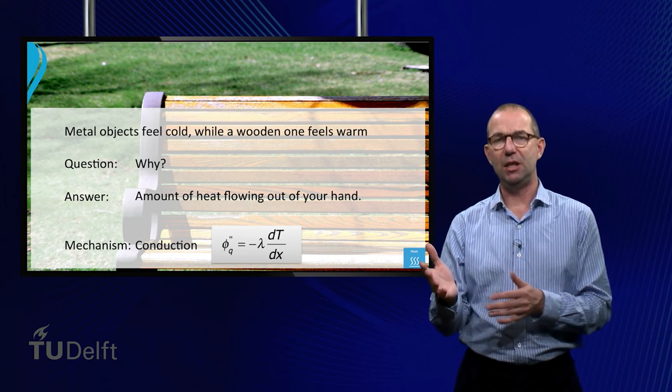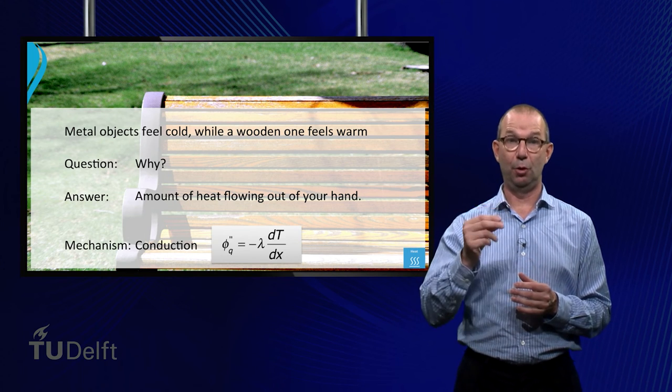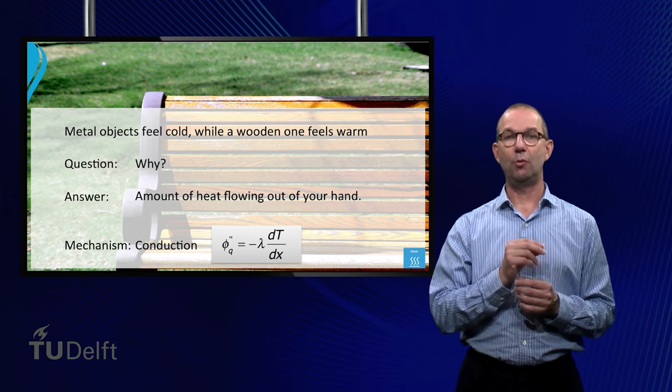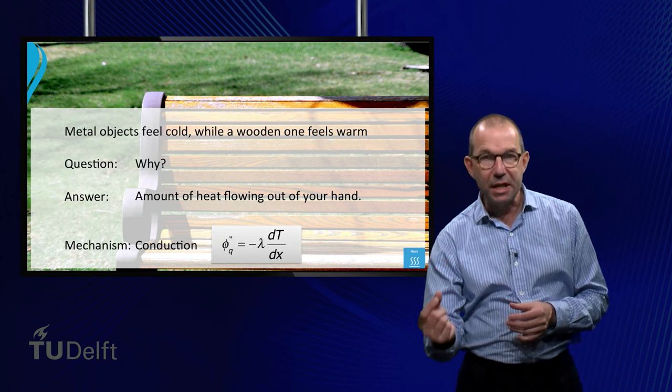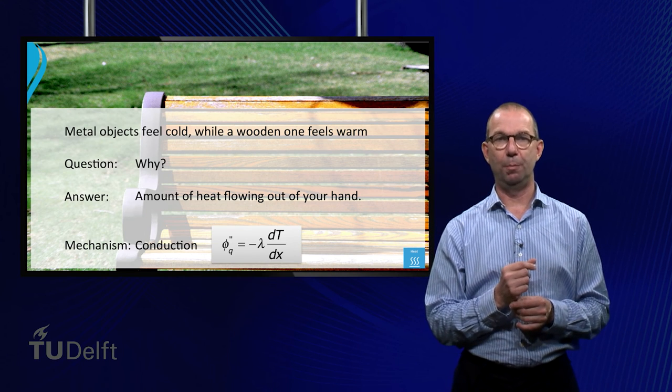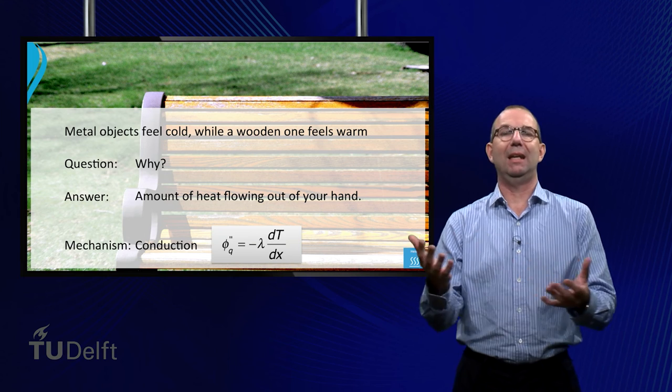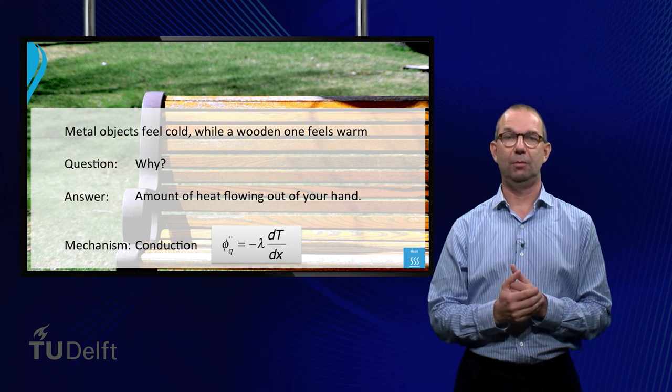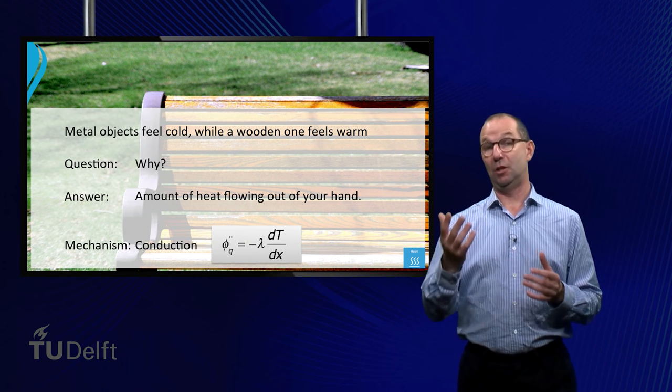In the case of a wooden object, the penetration of heat is slow, as the penetration depth, being proportional to the square root of the thermal diffusivity, progresses slowly. Consequently, little heat flows into a wooden object and your hand doesn't cool down at all, as your body can easily keep your skin at a constant temperature. You experience this as if the wooden object is warm.